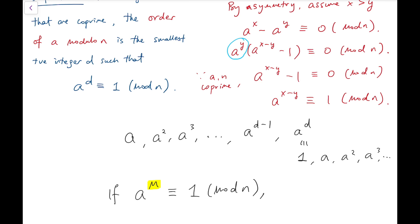under the mod n operation, and so that's a multiple of the time the first period ends, and that's d. So that means this d divides m.